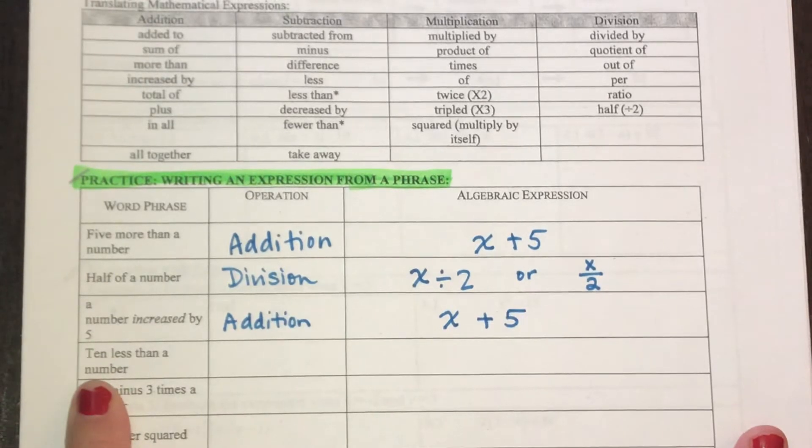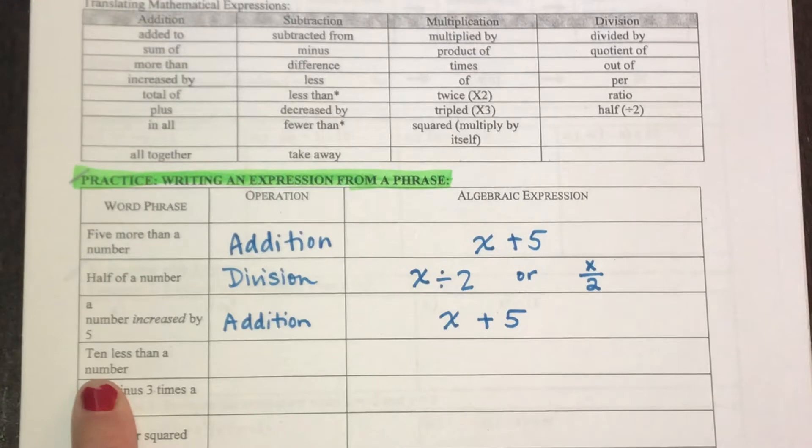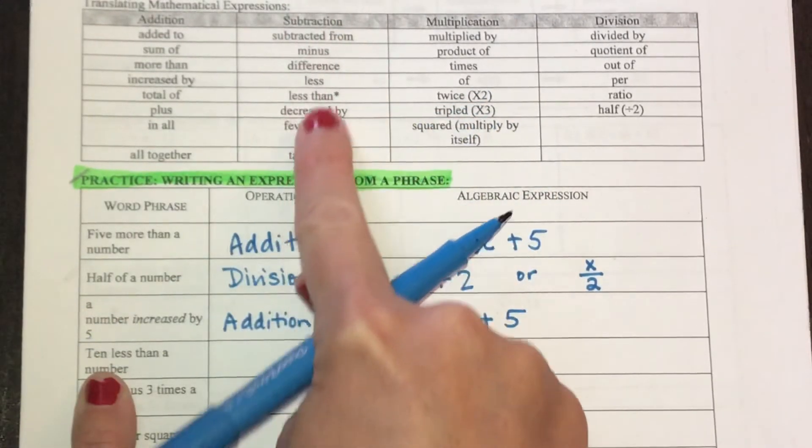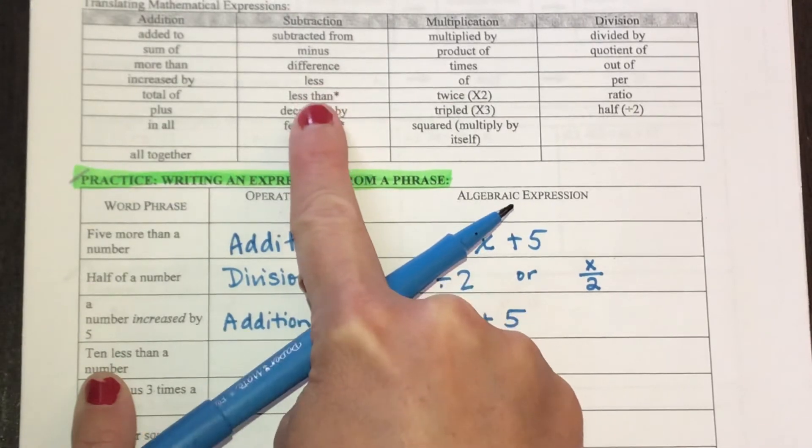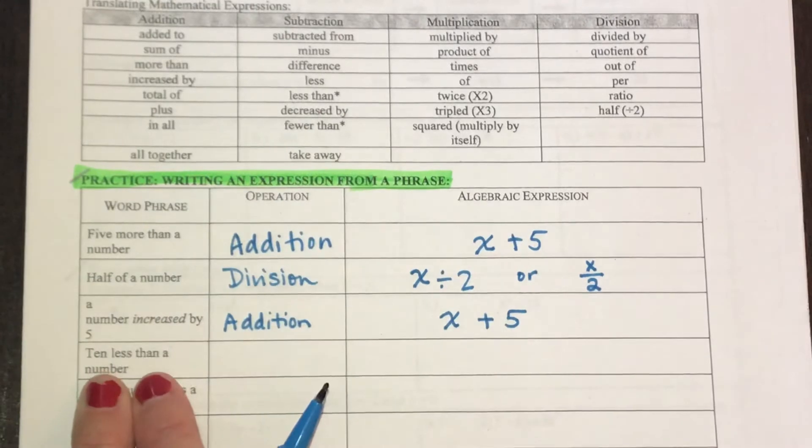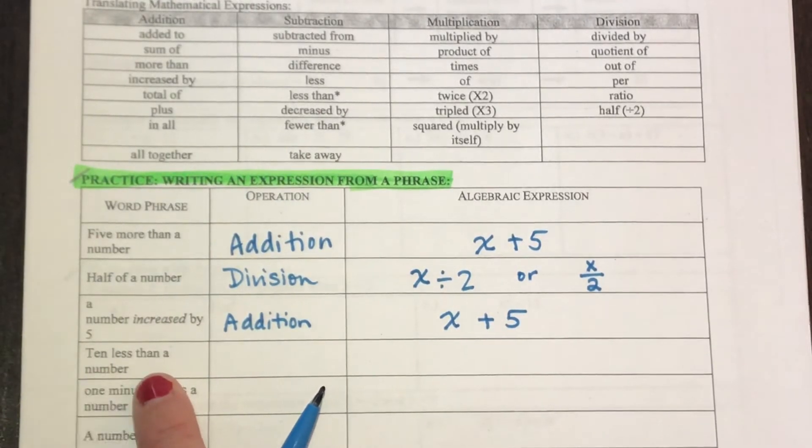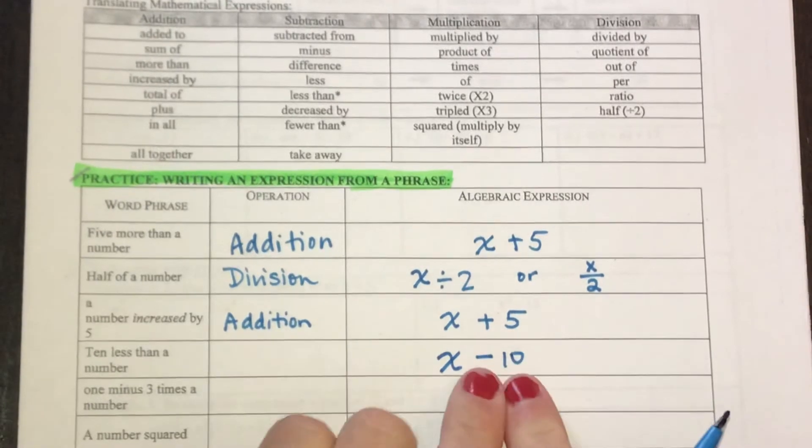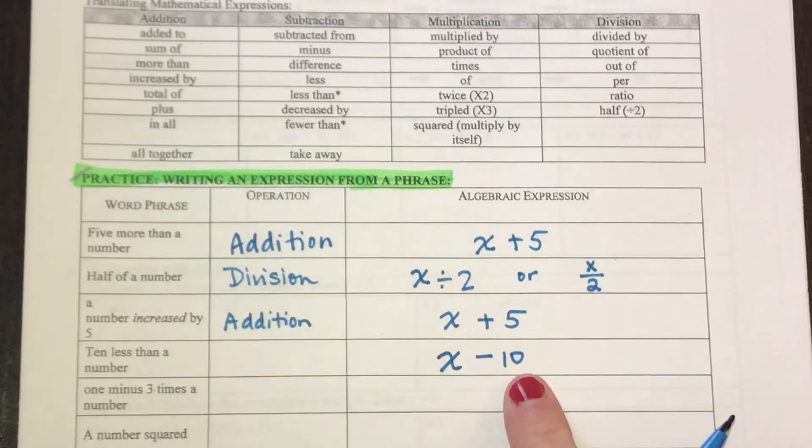In this next question, it says 10 less than, 10 less than a number. Now, notice up here in this column for subtracting, it says less and then less than. There's a little asterisk here because if you're going to take 10 less than something, you have to know what that something was first. So if I said, you have $10 less than me, you need to know how much money I have and then subtract 10 to know how much you have.